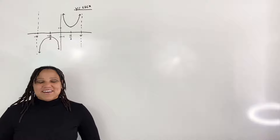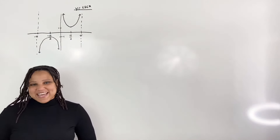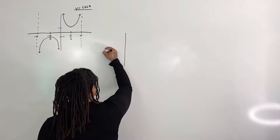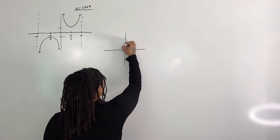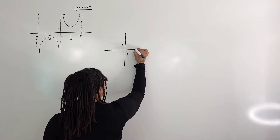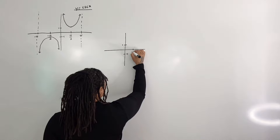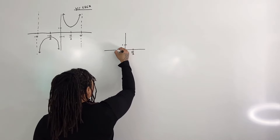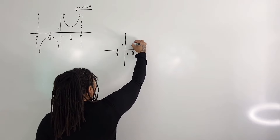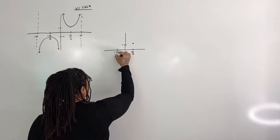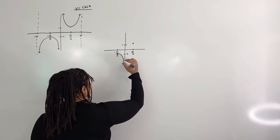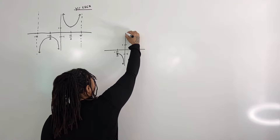Let us redraw the graph of inverse cosecant with the restricted domain. Here we have 1, here we have negative 1, here we have pi over 2, and here we have negative pi over 2. We're going to draw our graph from negative pi over 2 to 0, but not actually including 0, and from 0, not actually including 0, to pi over 2.